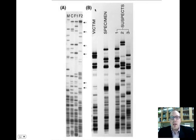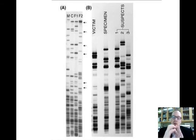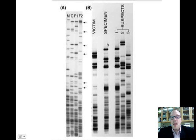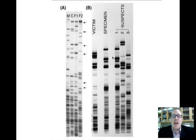Gel B is a crime scene evidence gel. Perhaps a victim was attacked or assaulted. A victim can have tissue from the attacker underneath their fingernails from fighting back and scratching, so a specimen can be taken from there or from other sources. A DNA fingerprint analysis is done from the specimen and run against suspects. As this gel indicates, suspect 1 has a very similar banding pattern to the specimen, making it likely that suspect 1 was, in fact, the attacker.